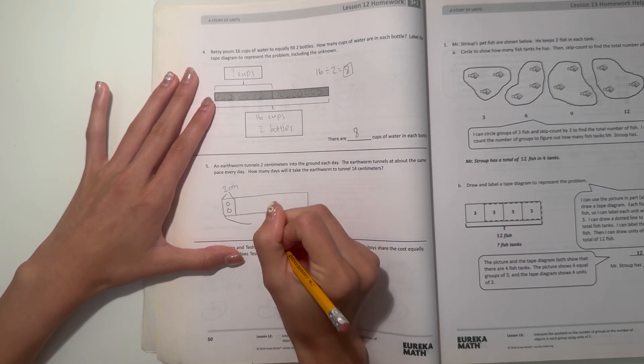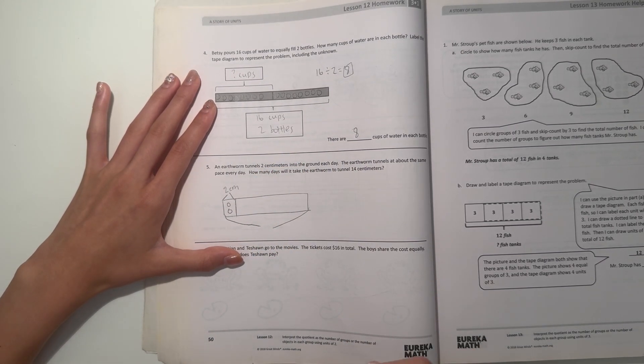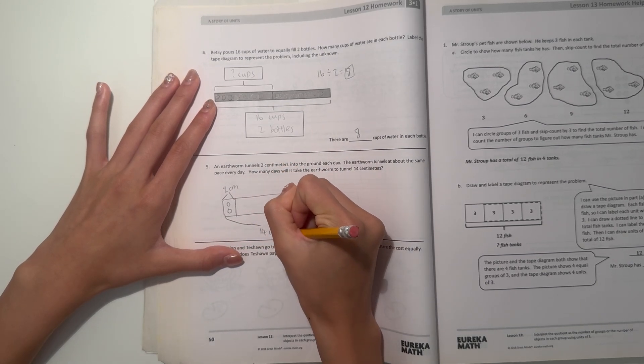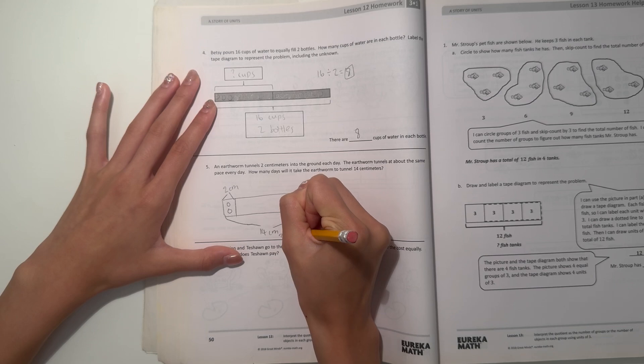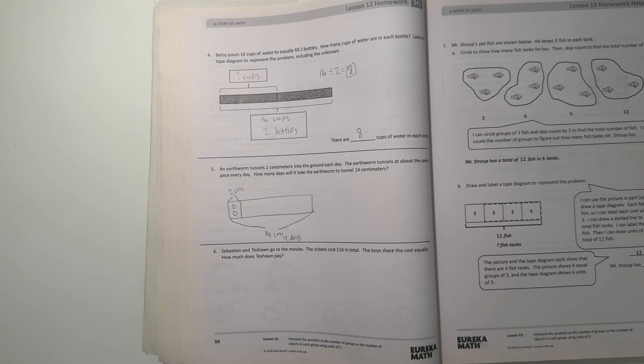And we want to find out how many days will it take until he tunnels a total of 14 centimeters. So we're trying to find out days. So when we can do this is just keep on drawing two until we count to 14.